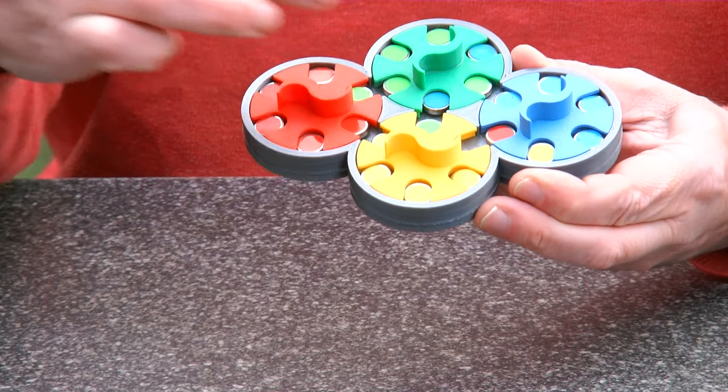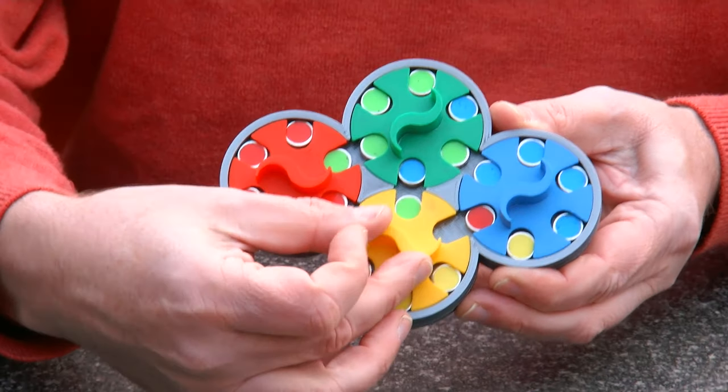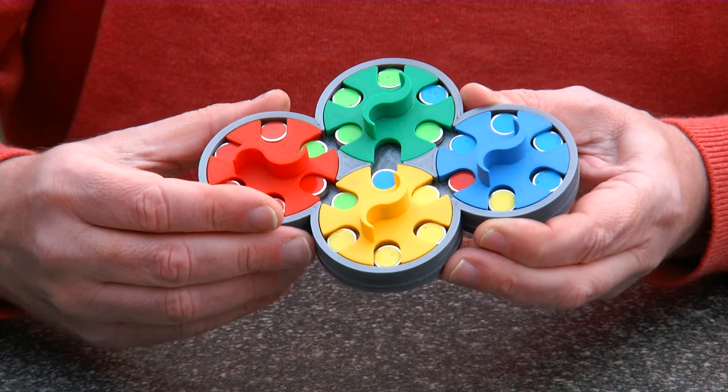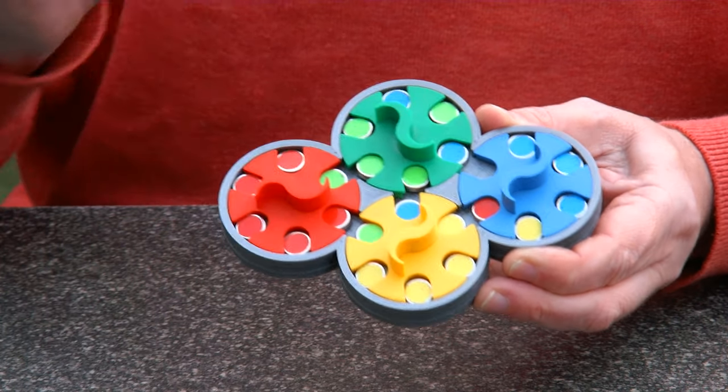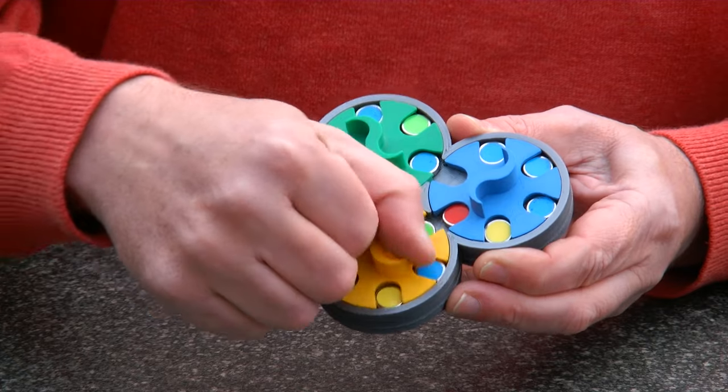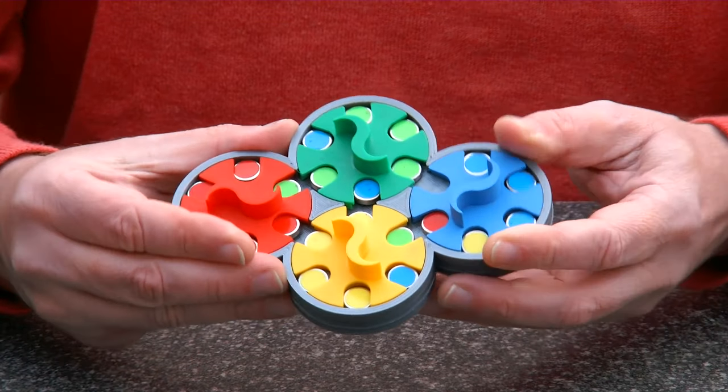So let's move the blue down. Click. And now we have another space here. So let's get another blue one. And you see by turning everything scrambles quickly.